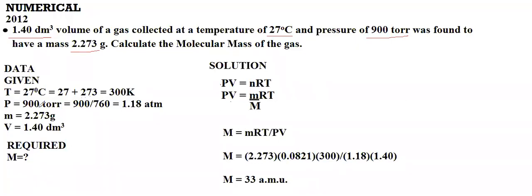We have converted 900 torr to atm by dividing by 760, giving 1.18 atm. The mass was given as 2.273 g, and the volume was given as 1.40 dm³.